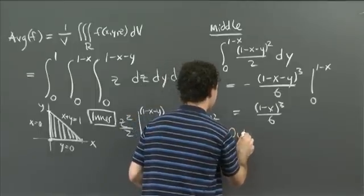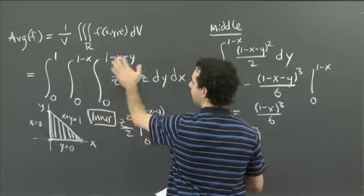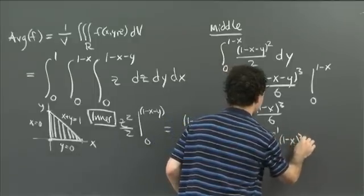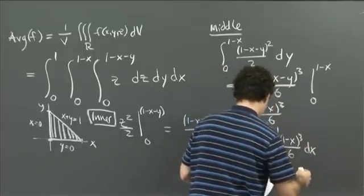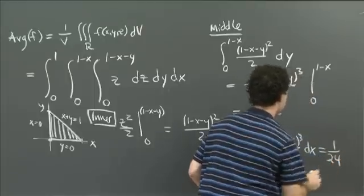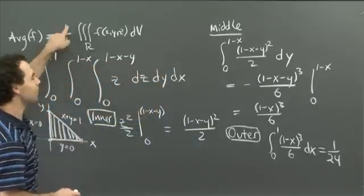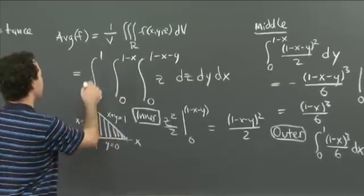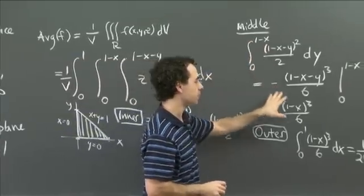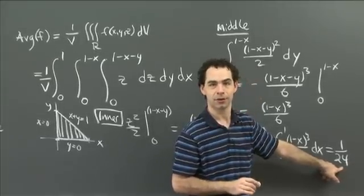Finally, the outermost integral is the integral from 0 to 1 of (1 − x)³/6 dx, which equals 1/24. Except I've done something wrong right at the beginning — I hope you all caught me. I had this 1/V factor and it disappeared. I forgot about the 1/V. So over here I should have written a 1/V in front of that integral. So 1/24 is the value of my triple integral, but the average height is 1/24 times 1/V — or rather 1/(24V).